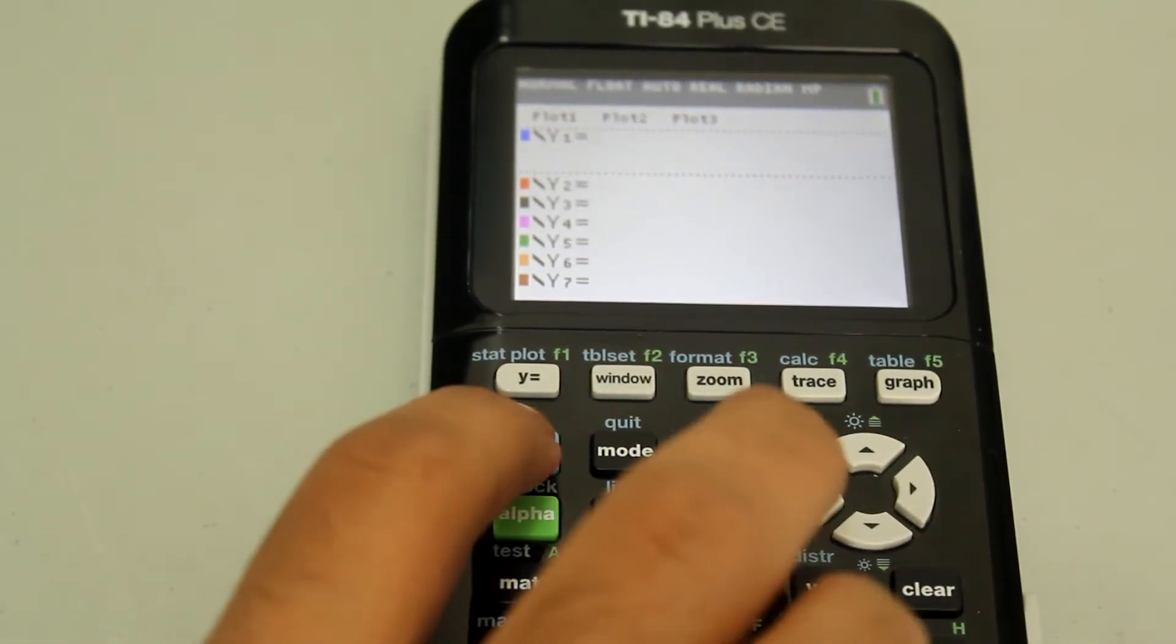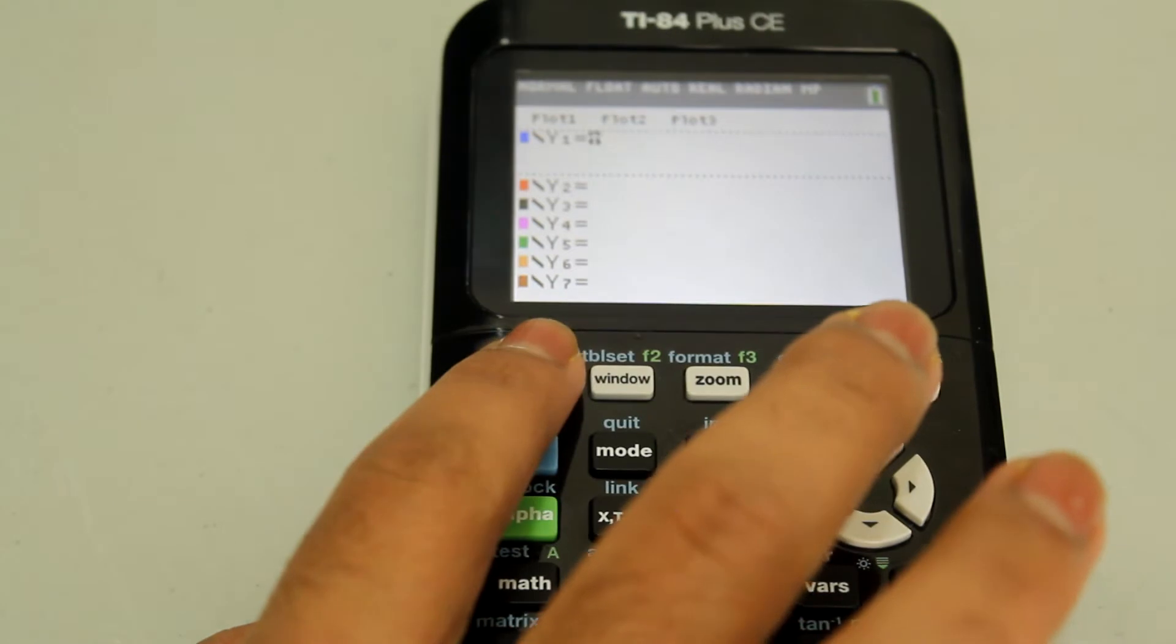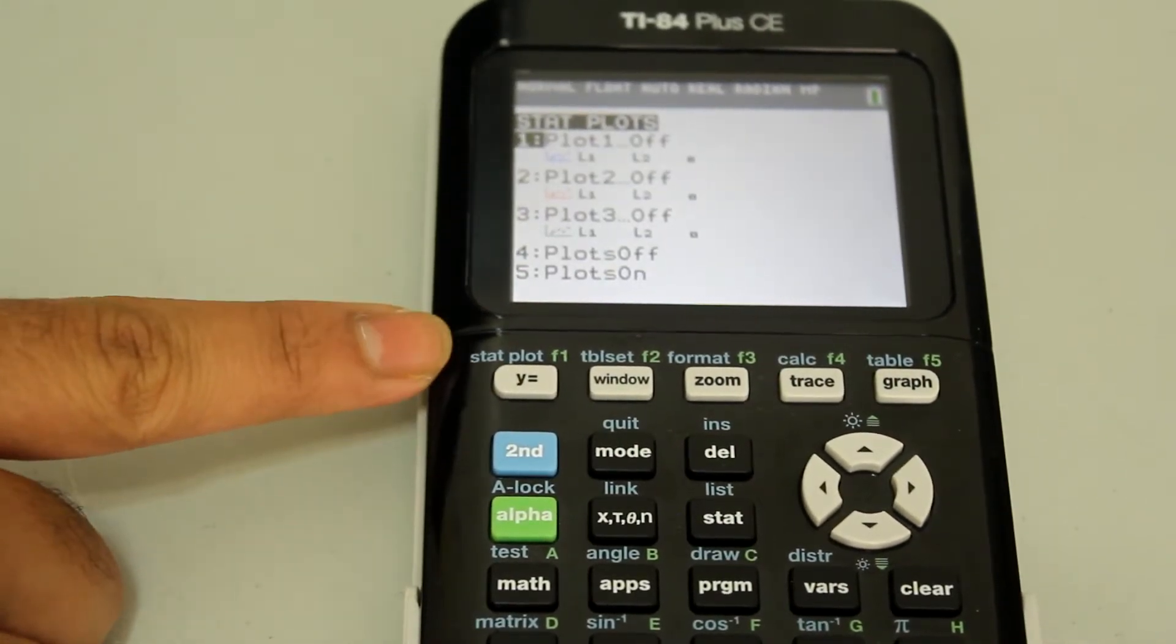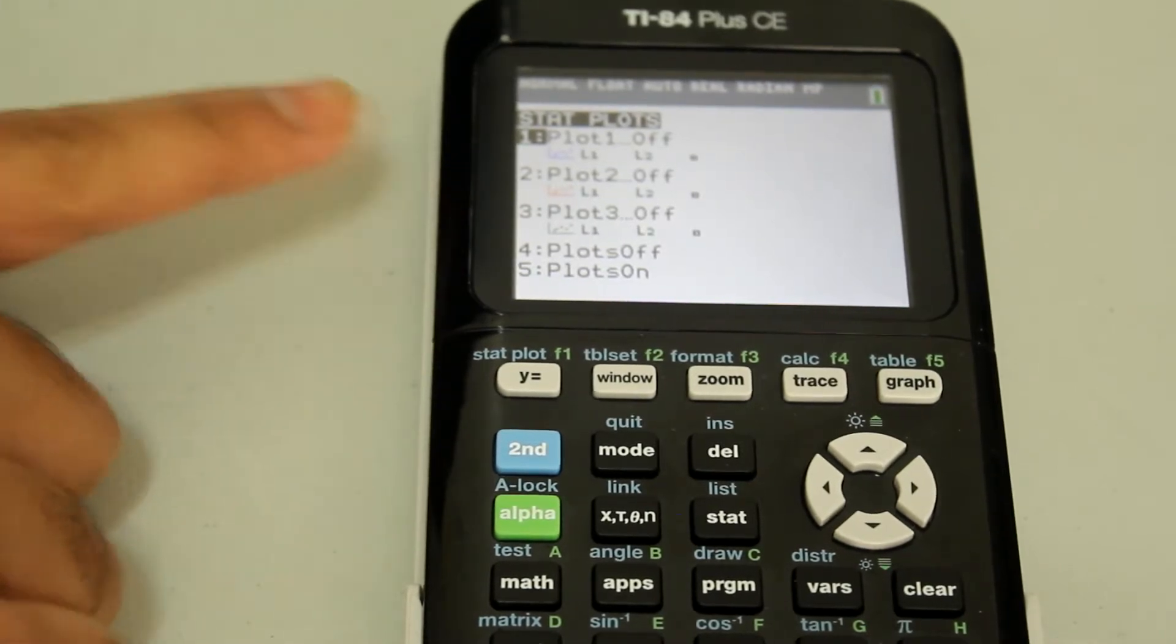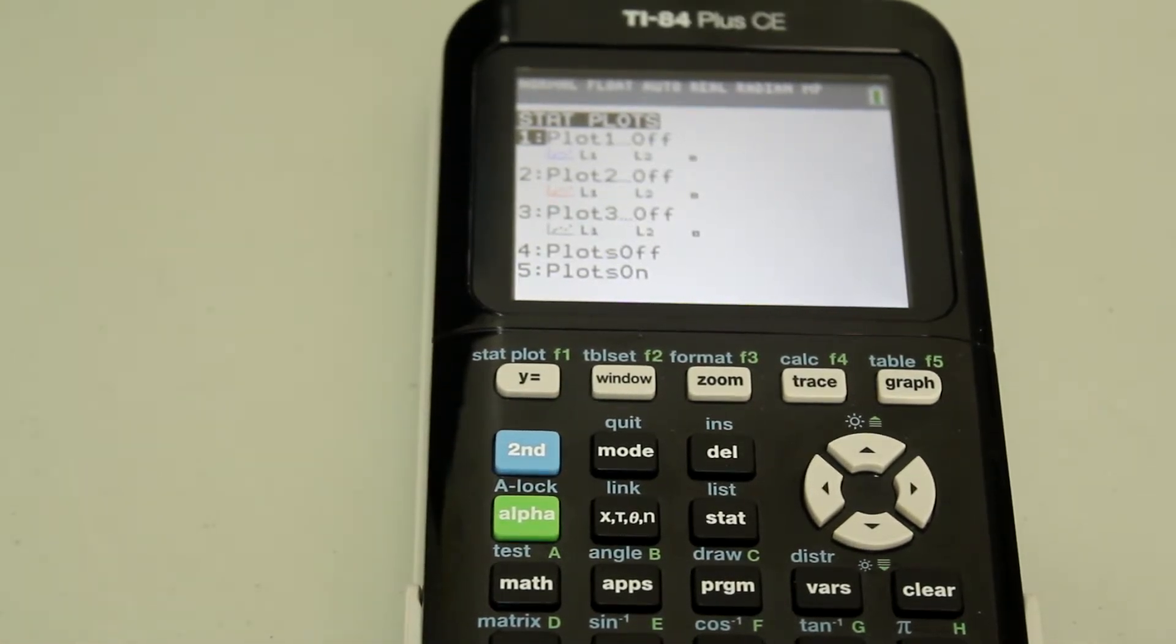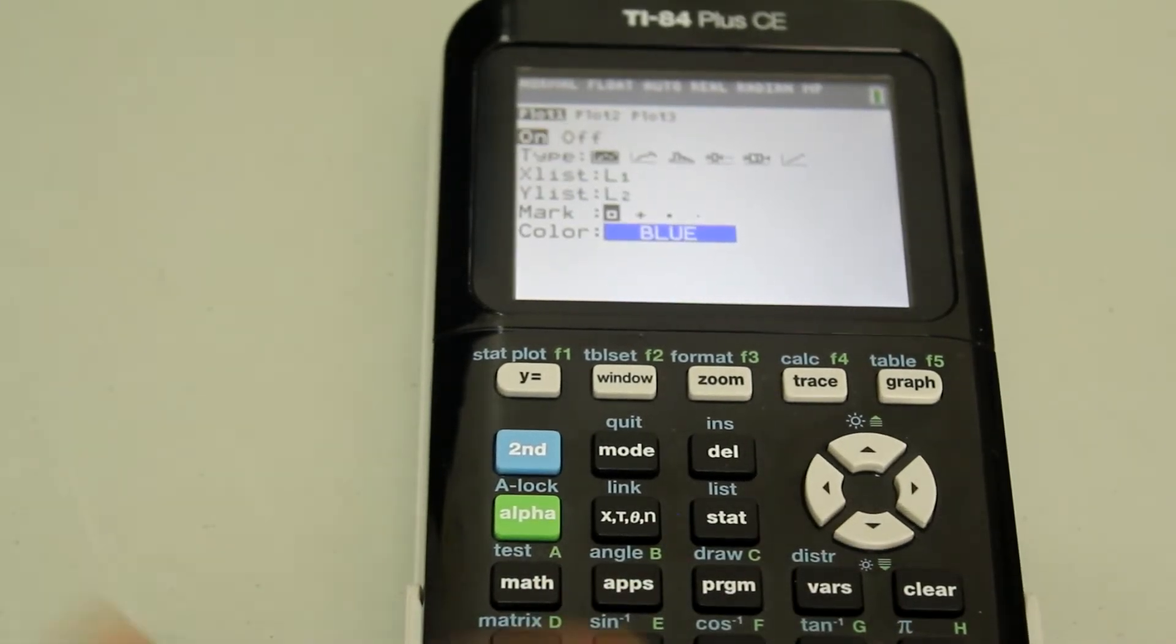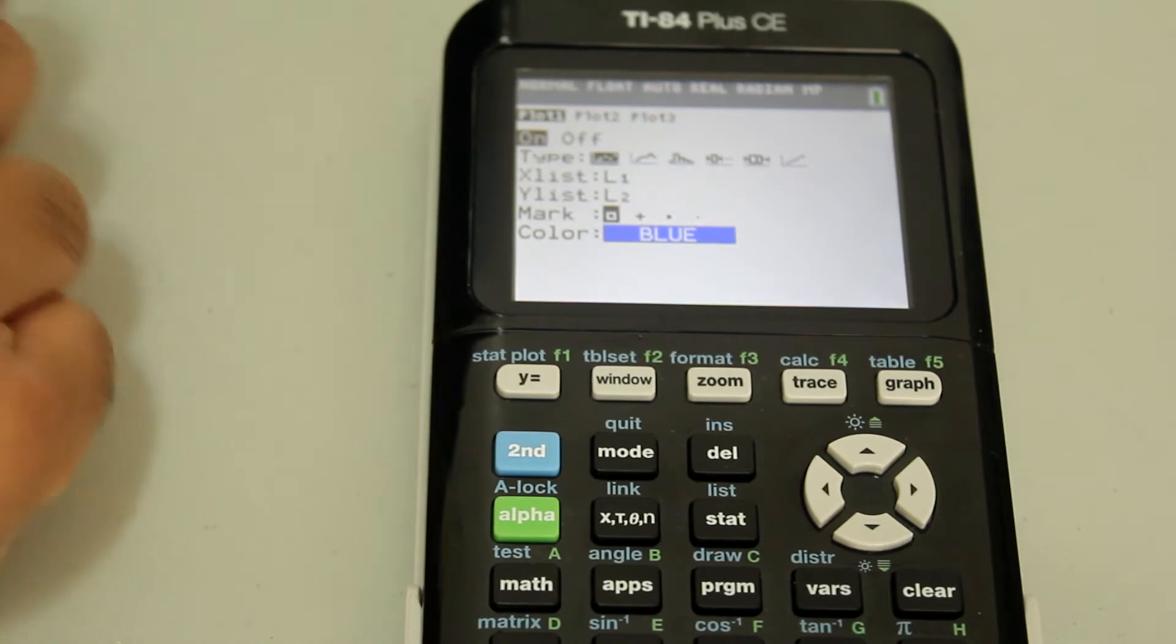Now we're going to hit second and then plot. We're going to hit second and the Y equals button which gives us that plot. We're going to select the first one either by hitting number one or the enter button, and we're going to turn the plot on and make sure that the scattered dots are selected.